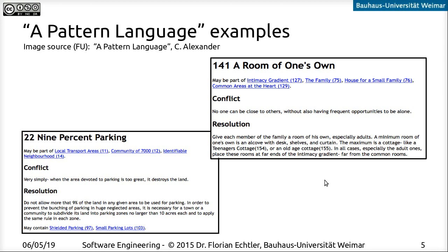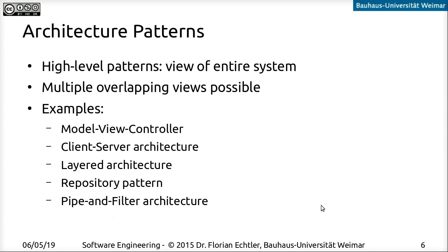All right. So first of all, let's talk about the architectural patterns. These are at a very high level and they provide an overview over the entire system. They can overlap, so it's not like you have to select exactly one of them. Some parts of the system can correspond to one architectural pattern, and other parts can correspond to another one. Or you can even have two separate views corresponding to two different patterns for the same software system.